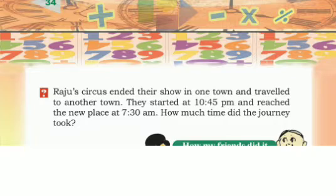Now let us do this activity. Raju's circus ended their show in one town and traveled to another town. They started at 10:45 PM — that means at night — and reached the new place at 7:30 AM, so they reached in the morning. How much time did the journey take?